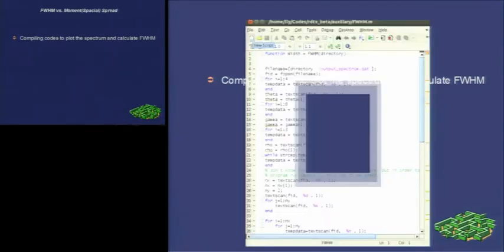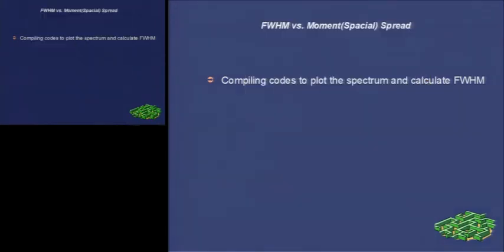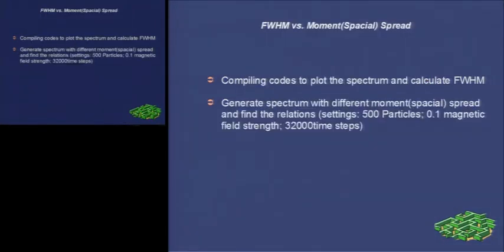Here is the code for FWHM. Then, we need to generate the spectrum under a certain general setting. Here, the time step means the resolution. The higher this number is, the higher resolution can be obtained. However, higher resolution means lower program efficiency.